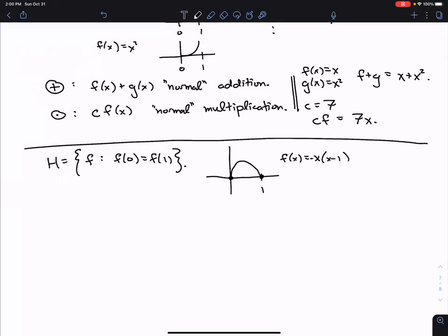So this function has two zeros. It has a zero at zero and a zero at one. And so because it's equal to zero at both places, those endpoints are equal. So F(0) is zero, and so is F(1).